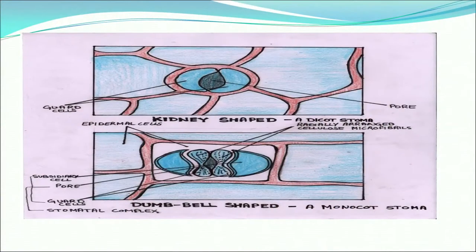Here is an illustration showing how stomata look in a dicotyledonous leaf and in a monocotyledonous leaf. In dicots, the guard cells are kidney-shaped, and stomatal opening is regulated by these guard cells. In monocotyledonous leaves, the guard cells are dumbbell-shaped.